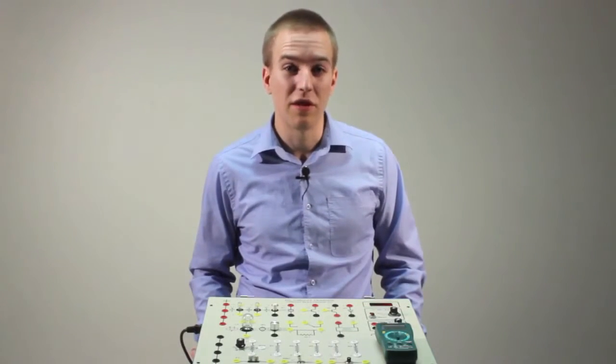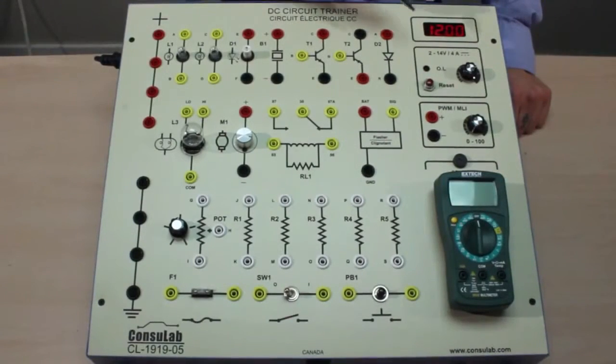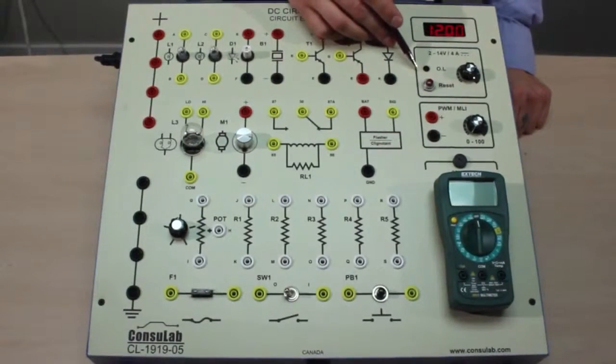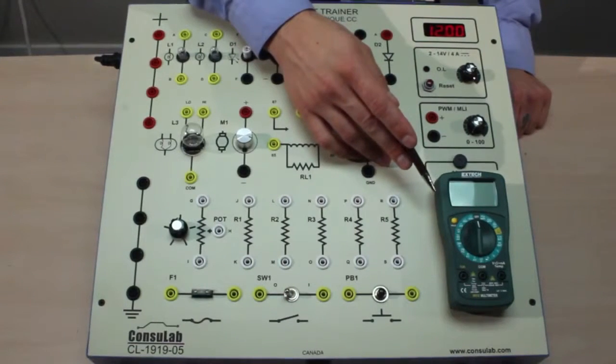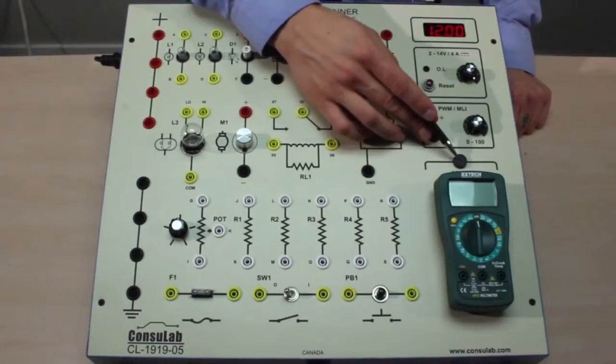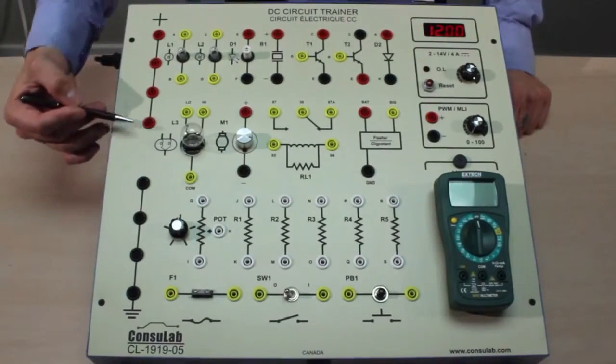Now I'd like to show you some of the features of the product. On the trainer we have a built-in variable DC power supply with overload protection, pulse width modulation, a built-in multimeter that has no need for batteries since it's powered off the trainer with an external fuse, and our power and ground.